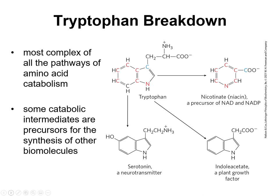Tryptophan has the most complex of all the pathways in amino acid metabolism because some intermediates from breaking down tryptophan are actually precursors for other biomolecules. Tryptophan is involved in making neurotransmitters and is a precursor of niacin — and thus NAD and NADP. It's a little extra but probably because it's so useful in neurotransmitter generation and generating NAD and NADP.